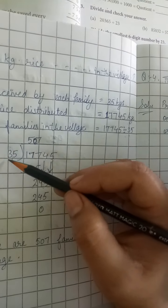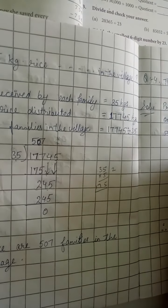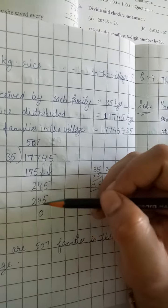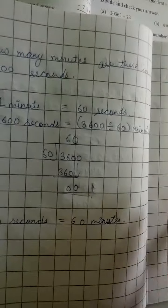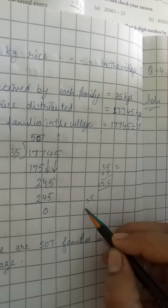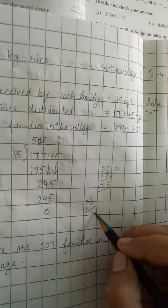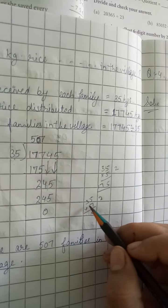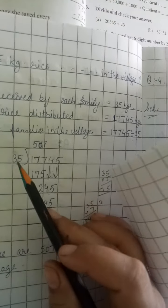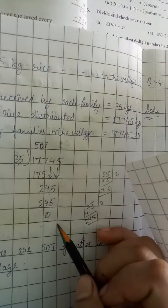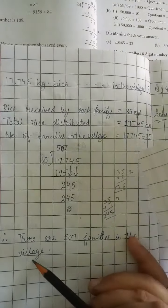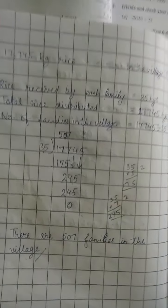Which table will this come in? 5 × 6 is 30, which is way less. 5 × 7 is 35, so 35 × 7 is 245, which is exactly divisible. So there are 507 families in the village.